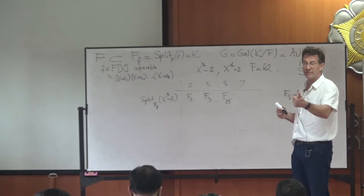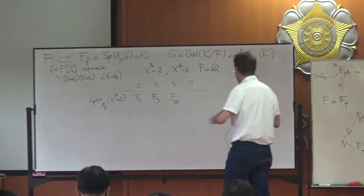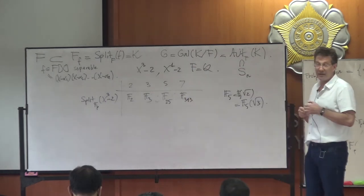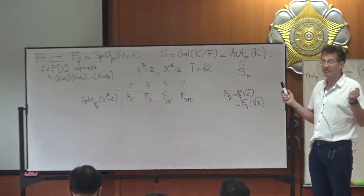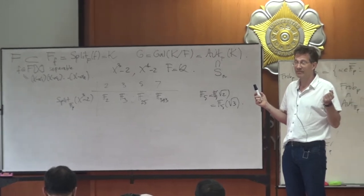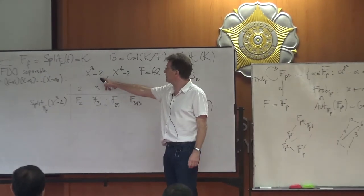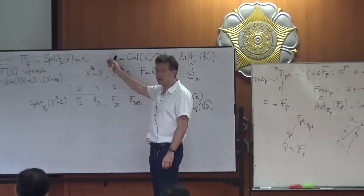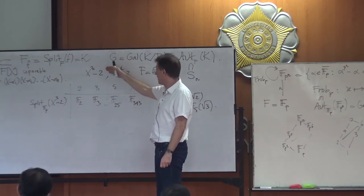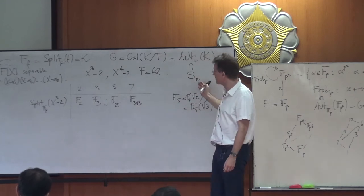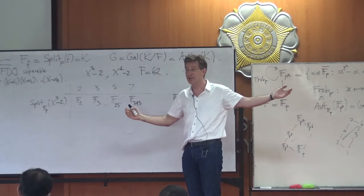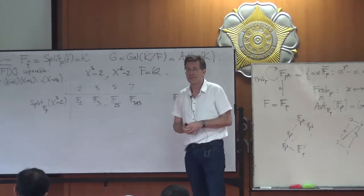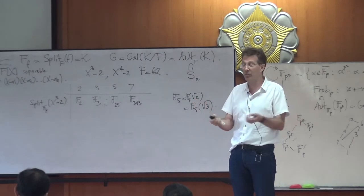Over 𝔽_{7³} the other roots are already present. Over ℚ you would need cube roots of unity and get something of degree 6, but over 𝔽_7 you cannot get S₃ as a Galois group because every Galois group over a finite field is cyclic. The cube roots of unity are in 𝔽_7 because the units form a group of order 6, which contains cube roots.